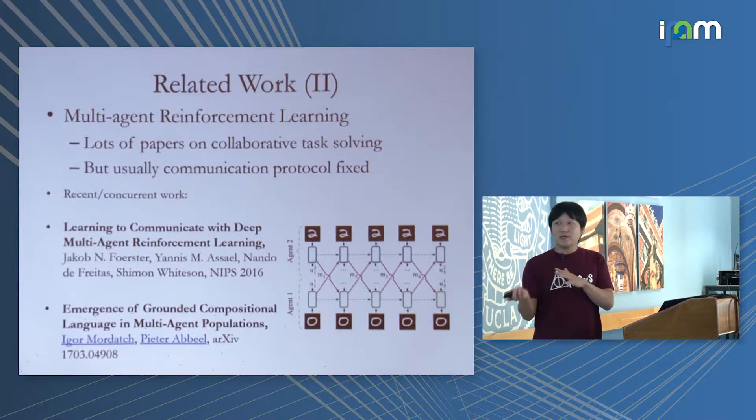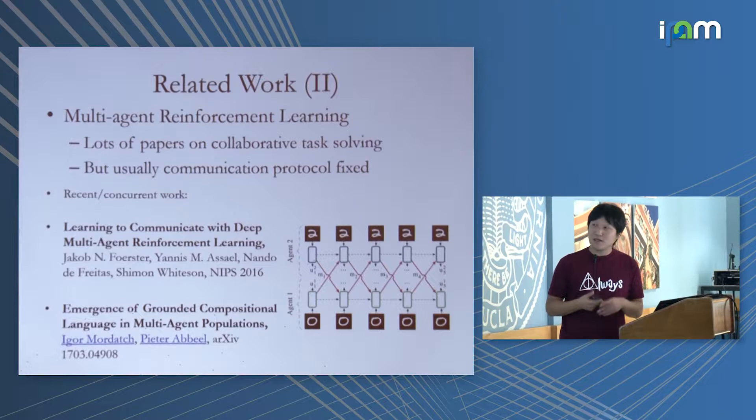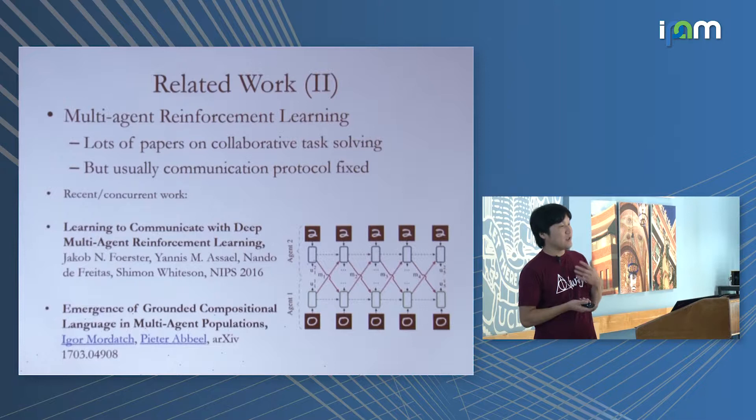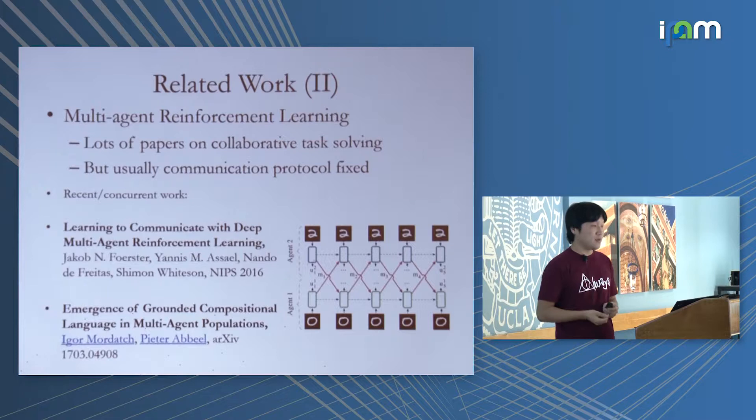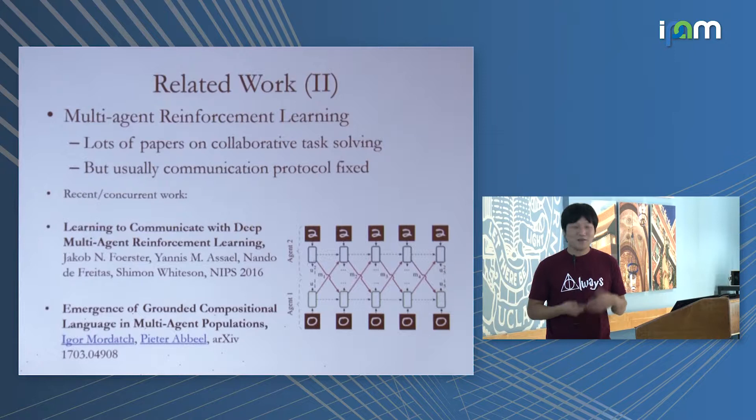On the multi-agent communication side, there are also many recent papers. Most of those researchers are interested in whether agents can communicate in human language — so a human can understand what the robots are planning — whereas if they're communicating in continuous vectors it's really hard to tell what's happening.